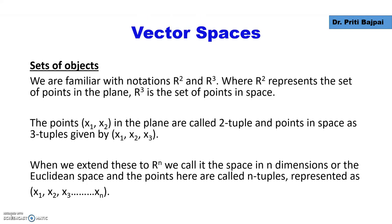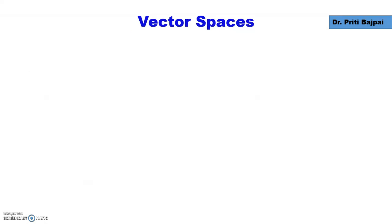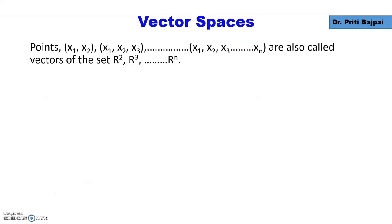They are given by x1, x2, ..., xn, and all these points x1, x2 in R², x1, x2, x3 in R³, and x1, x2, ..., xn in Rⁿ are also called vectors of the sets R², R³, Rⁿ.